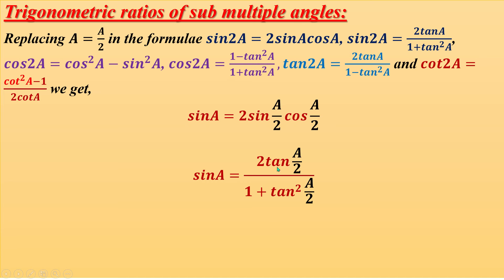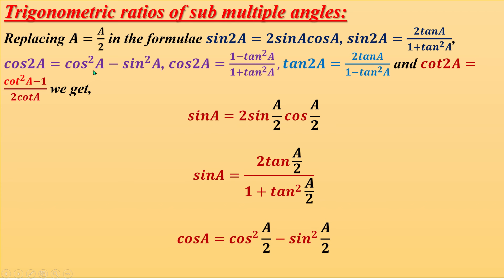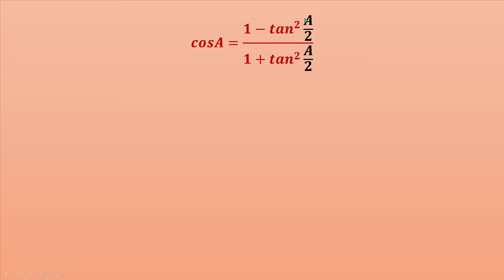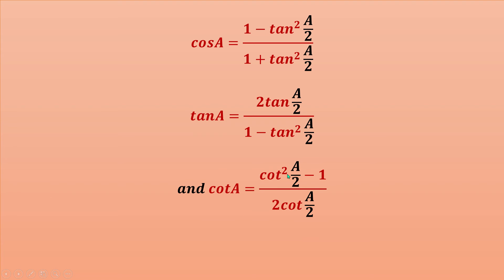Similarly: sinA = 2tan(A/2)/(1+tan²(A/2)); cosA = cos²(A/2) - sin²(A/2); cosA = (1-tan²(A/2))/(1+tan²(A/2)); tanA = tan(A/2)/(1-tan²(A/2)); cotA = (cot²(A/2) - 1)/(2cot(A/2)). You have to remember all of these.